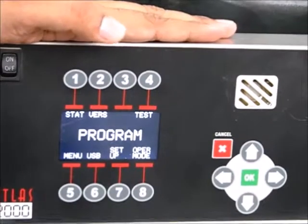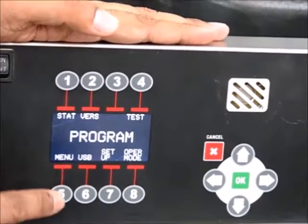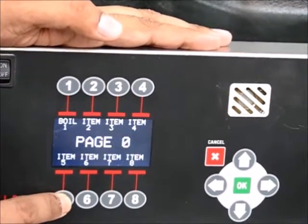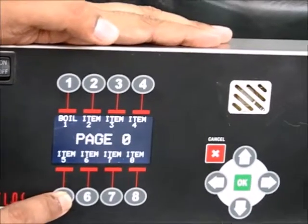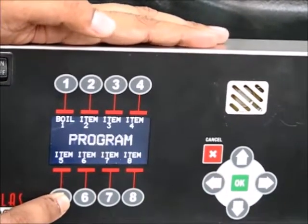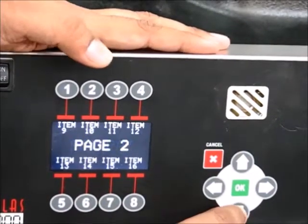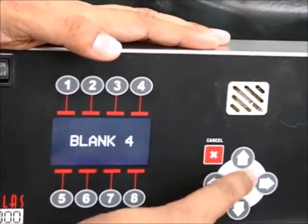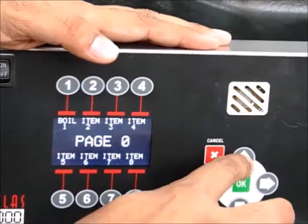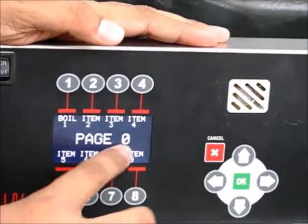To edit a page name, press button 5. Currently, page 0 is selected. To select other pages, press the up or down arrow button. To edit page 0, press OK.